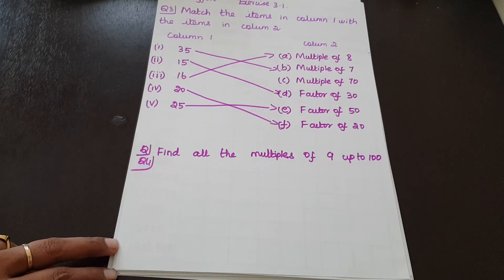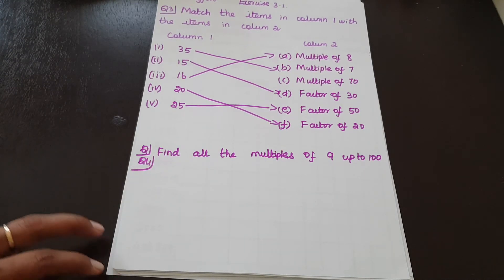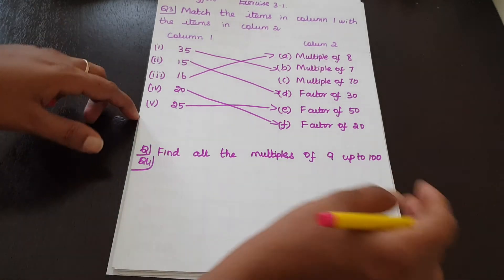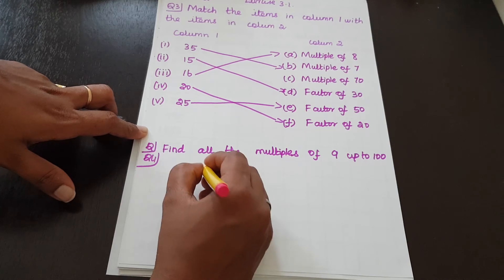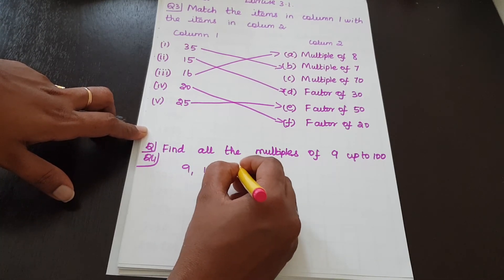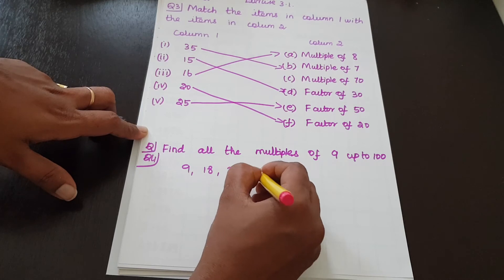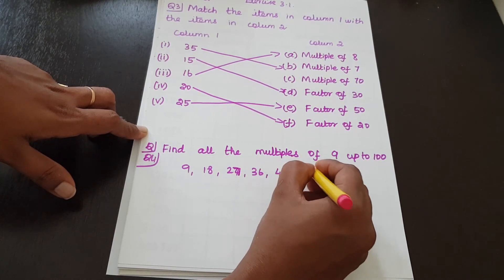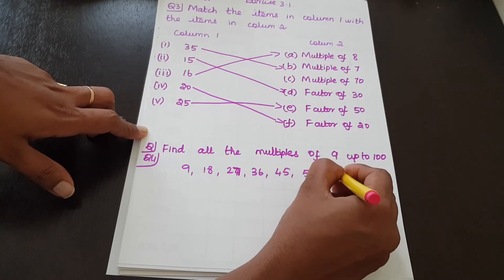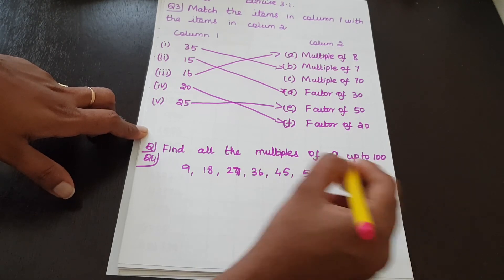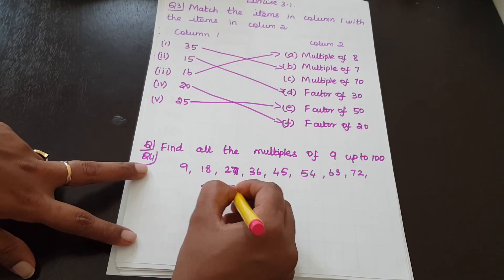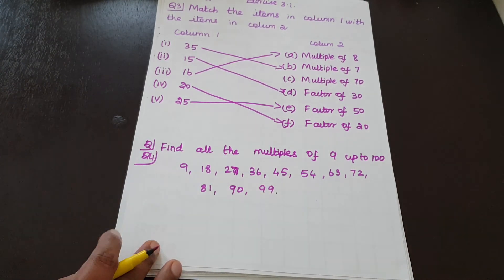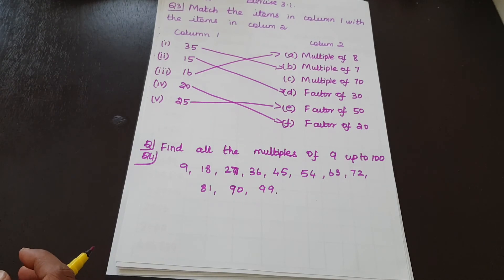Question 4: Find all the multiples of 9 up to 100. So we go through the 9 times table: 9, 18, 27, 36, 45, 54, 63, 72, 81, 90, 99. Since 99 is less than 100 and 108 exceeds 100, the multiples of 9 up to 100 are 9, 18, 27, 36, 45, 54, 63, 72, 81, 90, 99.